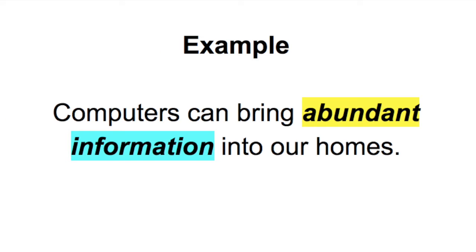Let's look at our example on activity page 51 in the rule box: 'Computers can bring abundant information into our homes.' The best way to find adjectives is to find the nouns first. Here we have 'computers' — that's a noun, a thing. Do we have anything describing what kind of computer, how many computers, or which computer? We don't, so there's no adjective describing 'computers.'